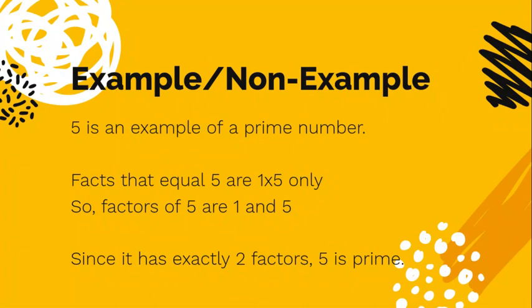5 is an example of a prime number. There's only one fact that equals 5, 1 times 5. So its factors are 1 and 5. Since 5 only has two factors, that makes it prime.